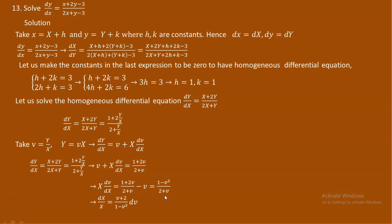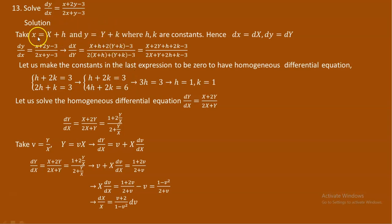Rewriting this expression, we separate variables: dX over X equals (v plus 2) over (1 minus v squared) dv. We have now separated the variables, with X on one side and v on the other. Note that we are still using capital letter X, and later we will use the values h equals 1 and k equals 1 to convert back.